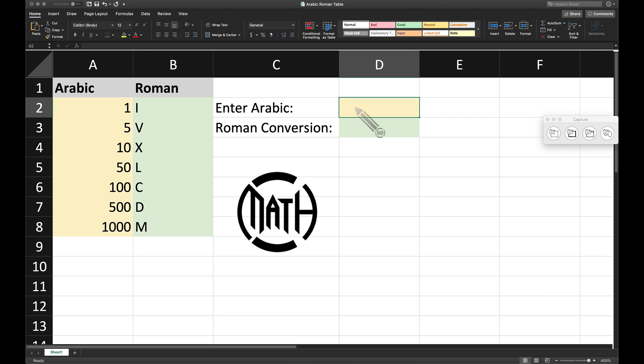Now I've created this little Excel file with Arabic numerals, and we can type in an Arabic numeral such as one and notice we have a tally mark down here for this Roman conversion. If I do a two, we have two tally marks. If I do a three, we have three tally marks. But be careful with four - four is not going to be four tally marks.